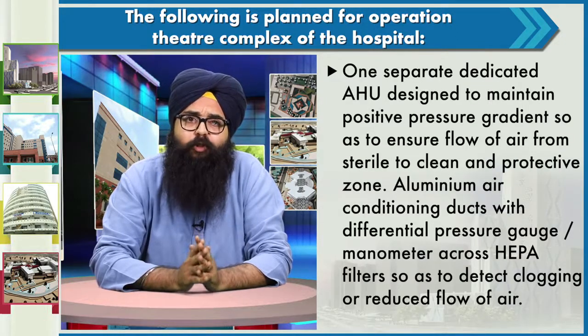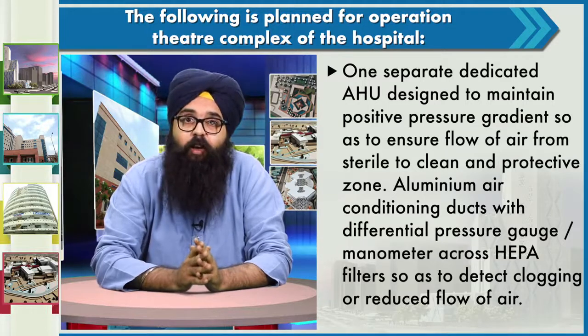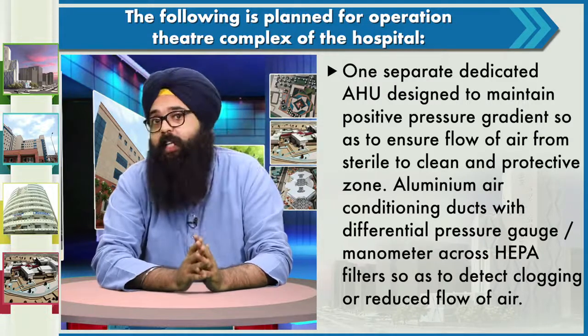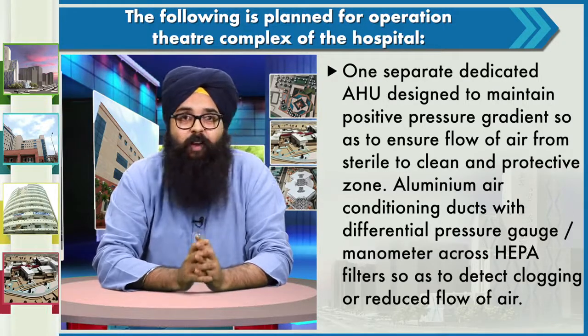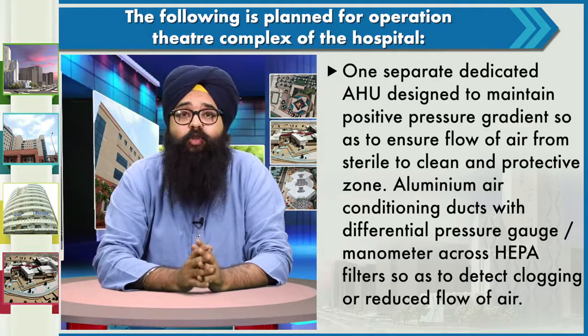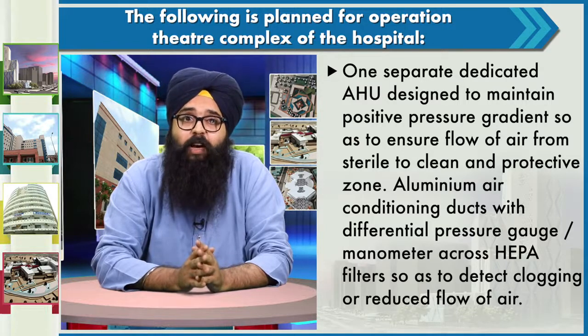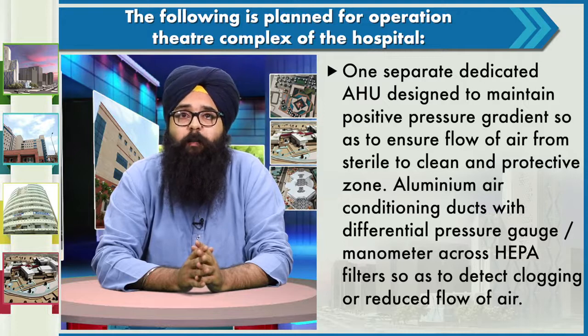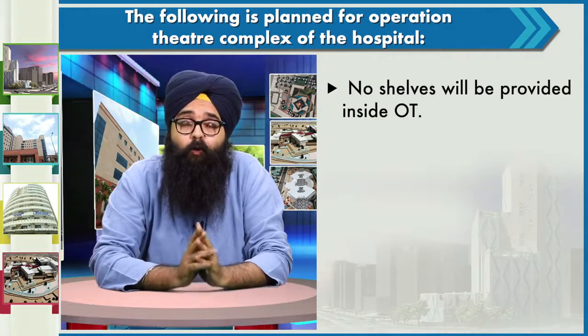One separate dedicated AHU — Air Handling Unit — is essential as part of the total HVAC system. Under no circumstances should AHU air from the OT suite intermix with other suites. The dedicated AHU must be designed to maintain a positive pressure gradient so as to ensure flow of air from sterile to clean and protective zones. Aluminum air conditioning ducts with a differential pressure gauge manometer across HEPA filters, to detect clogging or reduced air flow, must be provided. There should be no shelf provision in the OT.